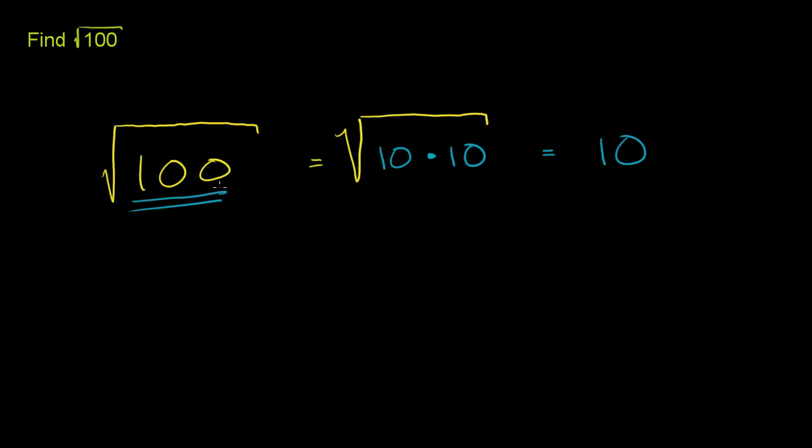So the square root of 100 is 10. Or another way you could write the same truth is that 10 squared, which is equal to 10 times 10, is equal to 100.